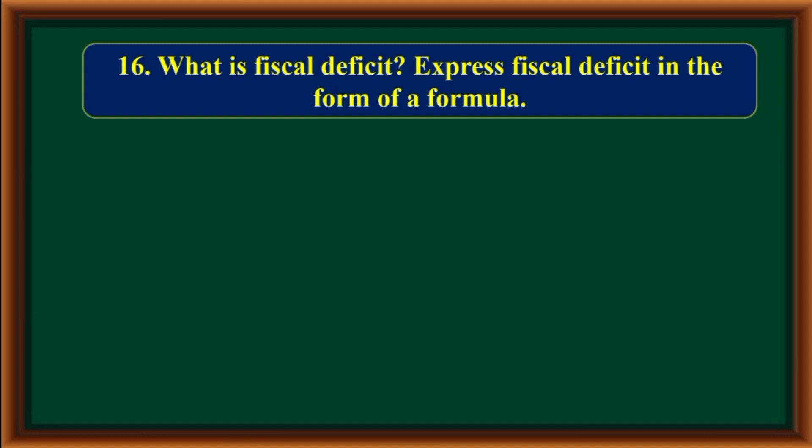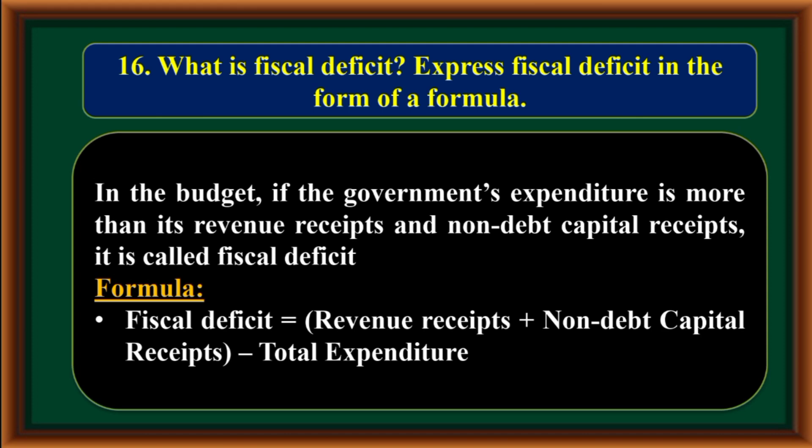What is fiscal deficit? Express fiscal deficit in the form of a formula. In the budget, if the government's expenditure is more than its revenue receipts and non-debt capital receipts, it is called fiscal deficit. Fiscal deficit equals revenue receipts plus non-debt capital receipts minus total expenditure.